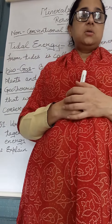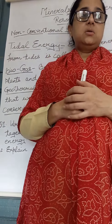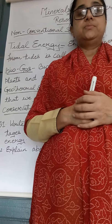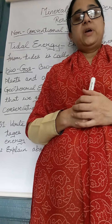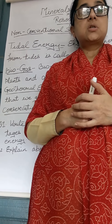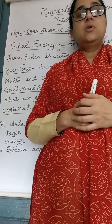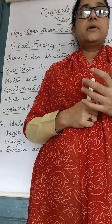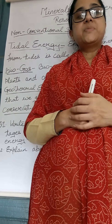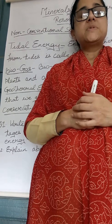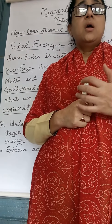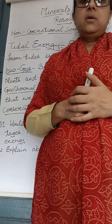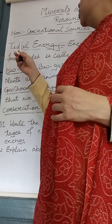What is solar energy? The energy produced through sunlight is called solar energy. What is wind energy? This type of energy can be produced by controlling wind power and it is used for operating water pumps and irrigation facilities.